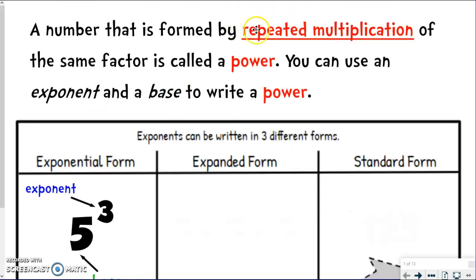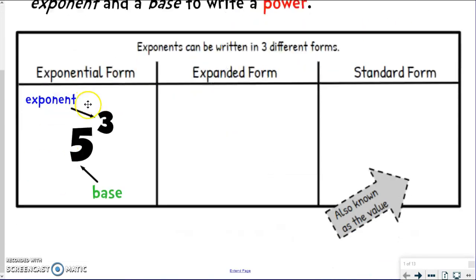So that base is the actual number that you are repeatedly multiplying. So when we talk about powers, repeated multiplication, the base is the number you're repeatedly multiplying. The exponent tells you how many times are you repeatedly multiplying that number. So we've got the base of 5, the exponent of 3.